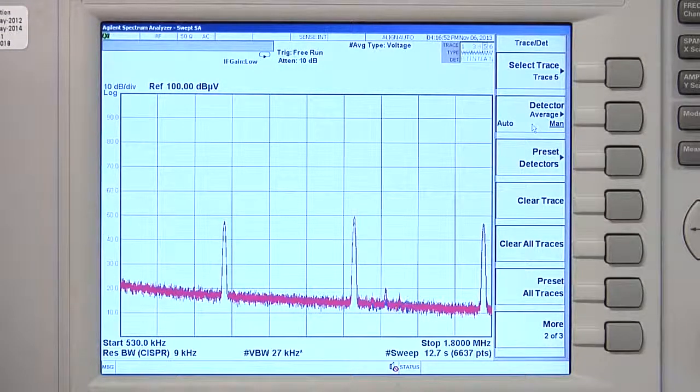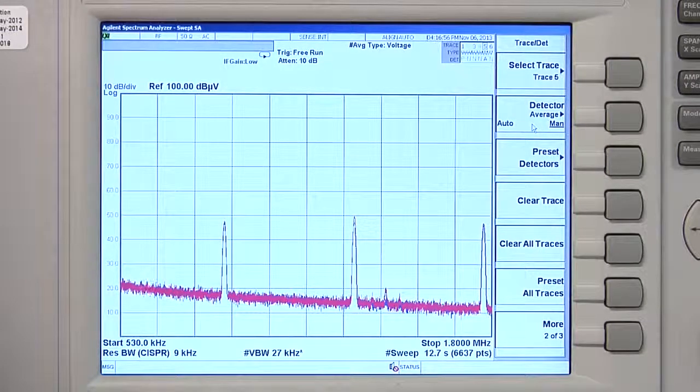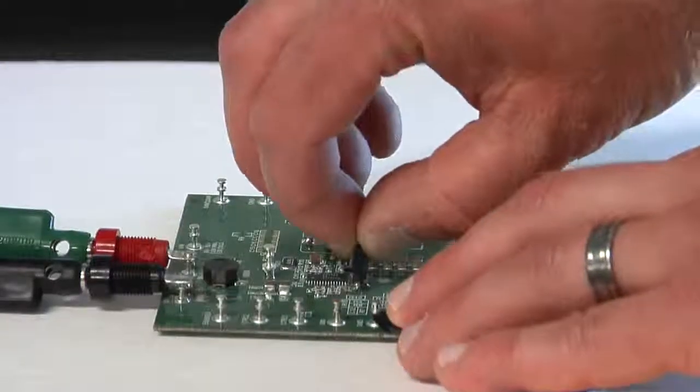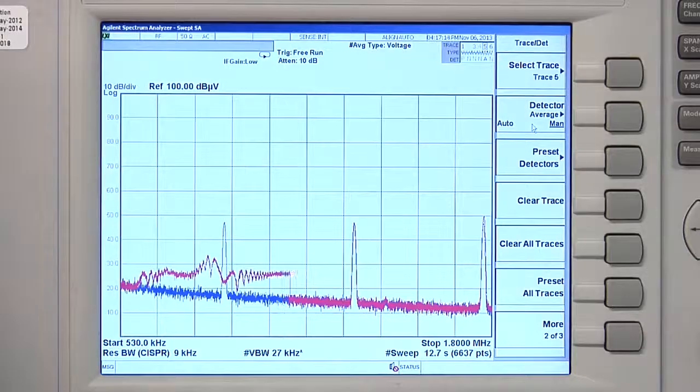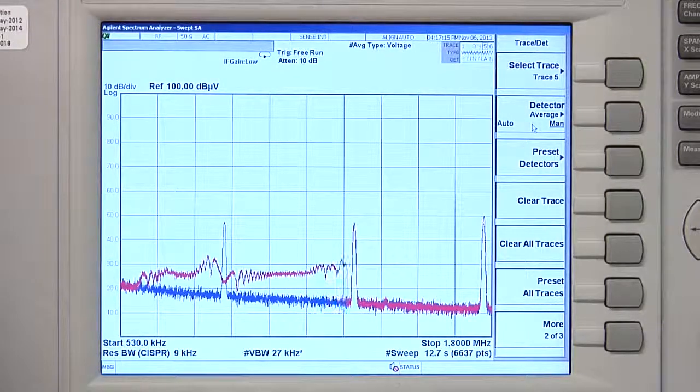This is the LT3795's conducted average EMI in the AM band without spread-spectrum. When I enable spread-spectrum, you can see that the conducted average EMI is significantly reduced.